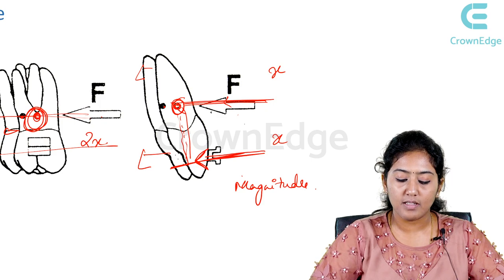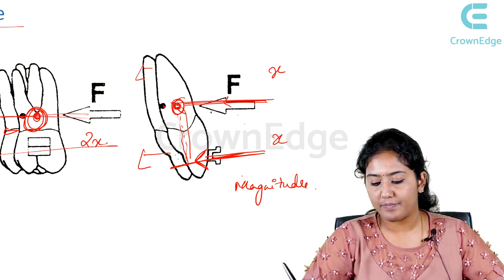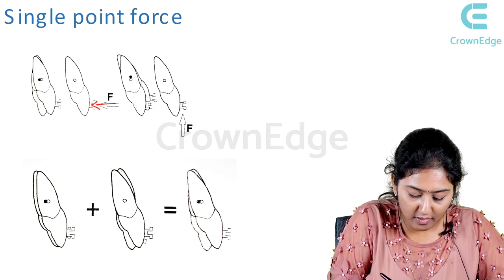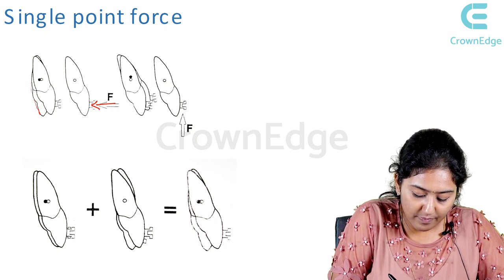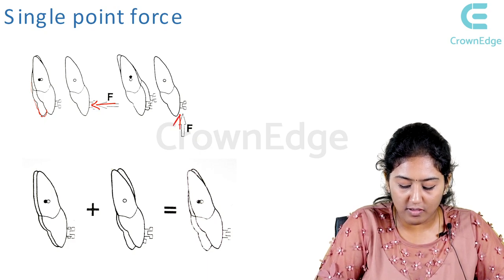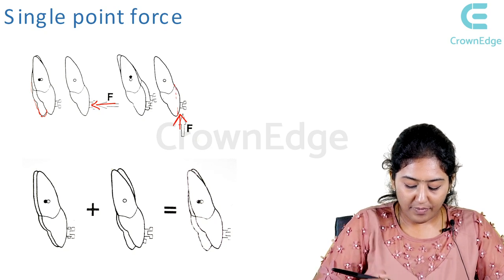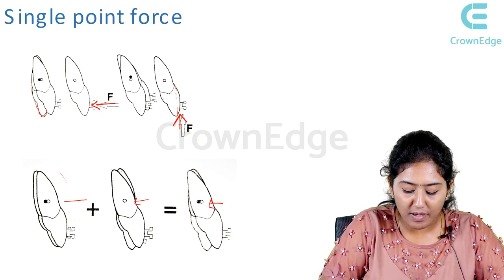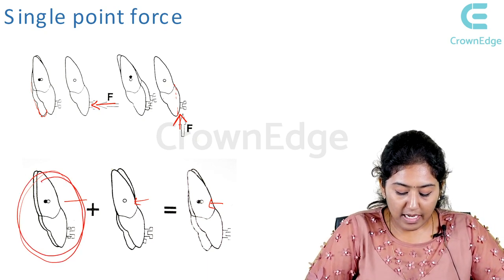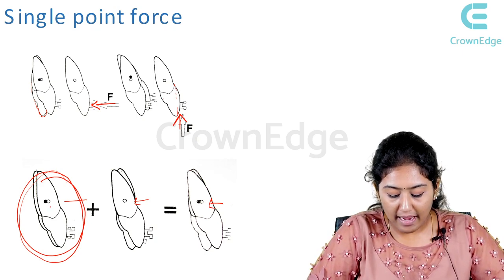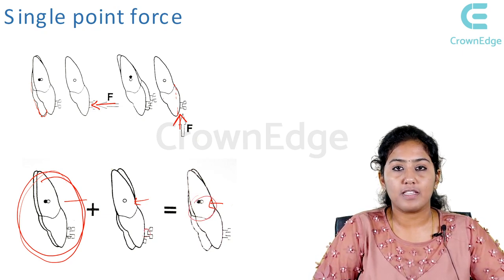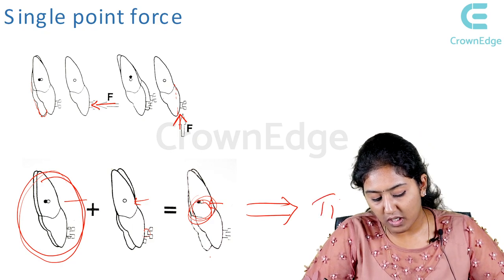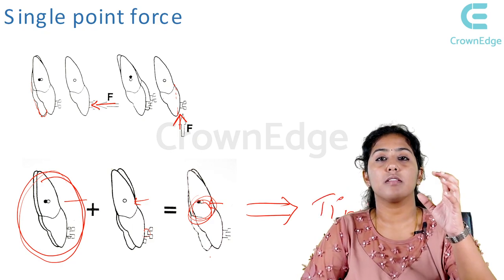Here is a picture. I have applied a single point of force at the bracket — so you can see there is only a tipping motion. Whereas if I apply the force at the center of resistance, you get a bodily movement. In case I apply a force both at the center of resistance and at the bracket simultaneously, it will still not give a bodily movement — you will again get a tipping movement. This is the concept of single point of force.